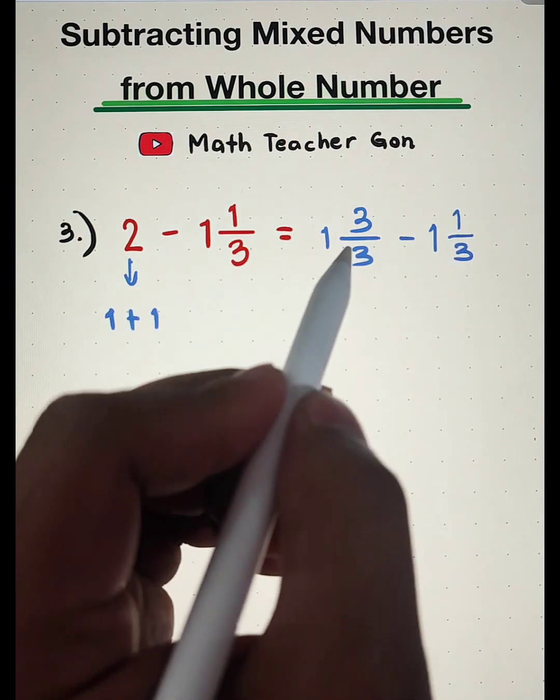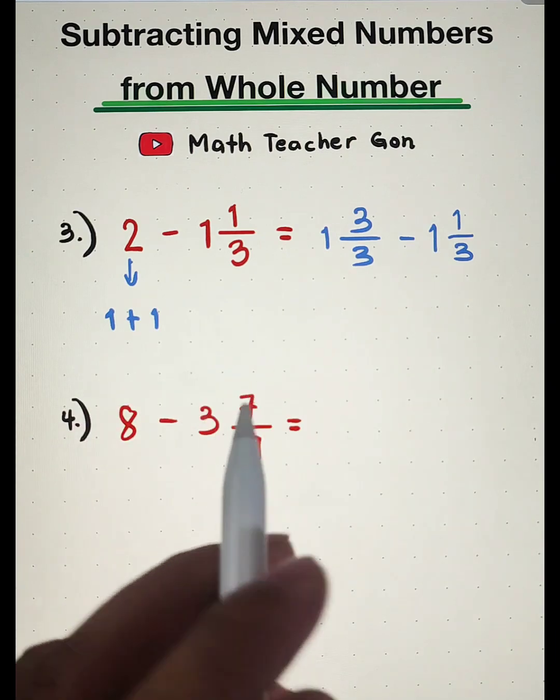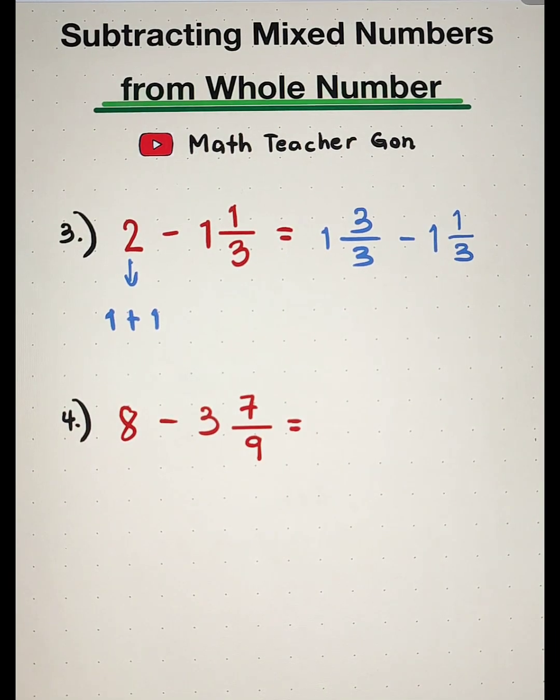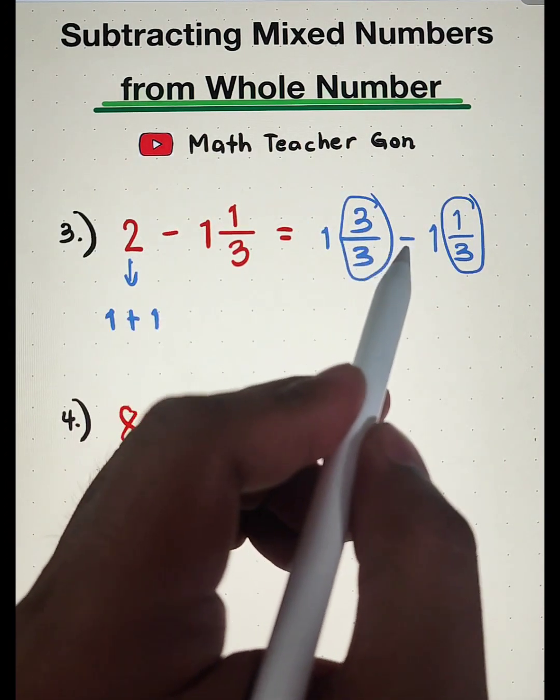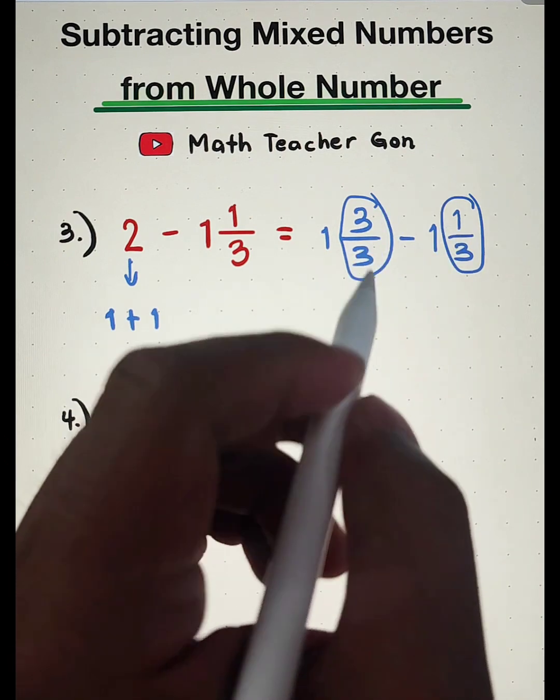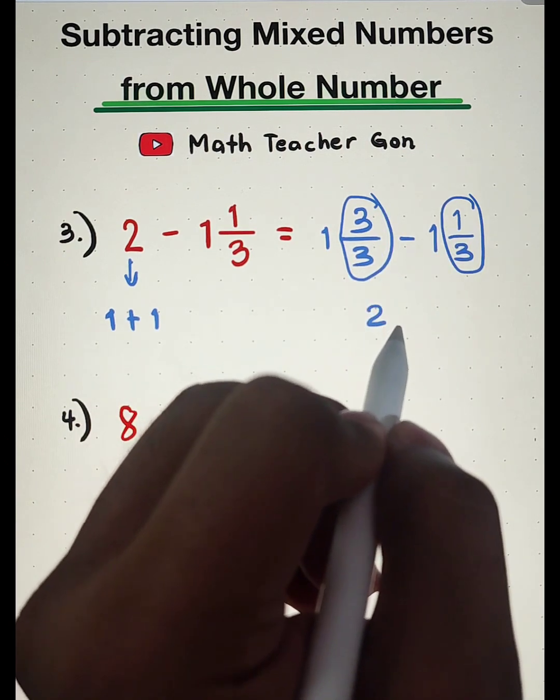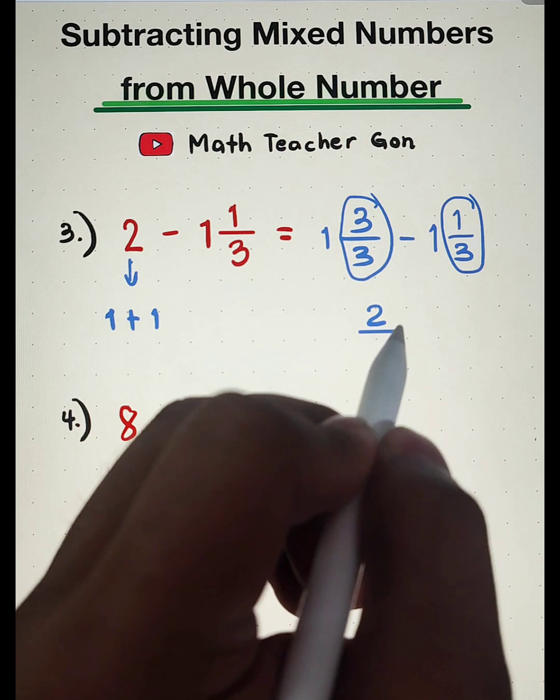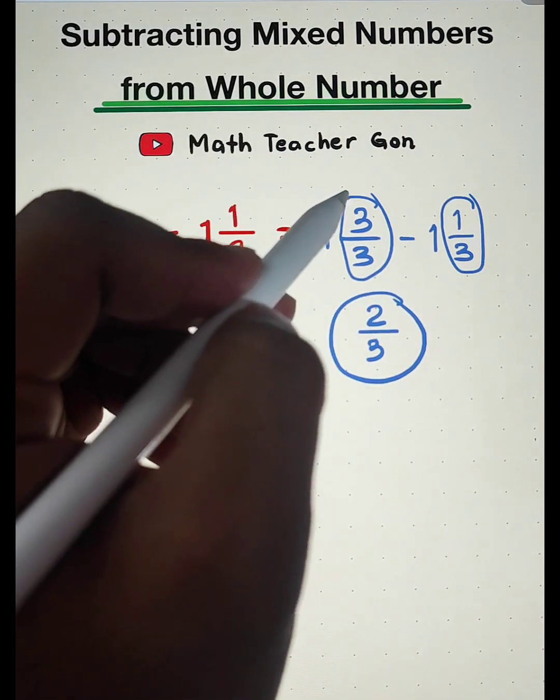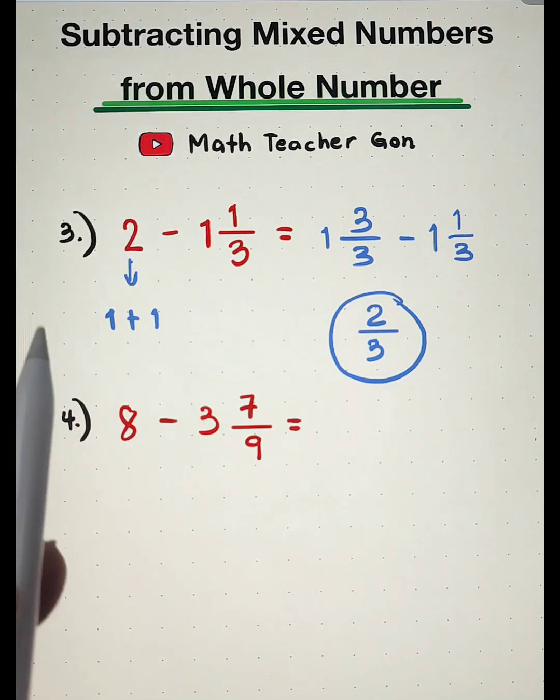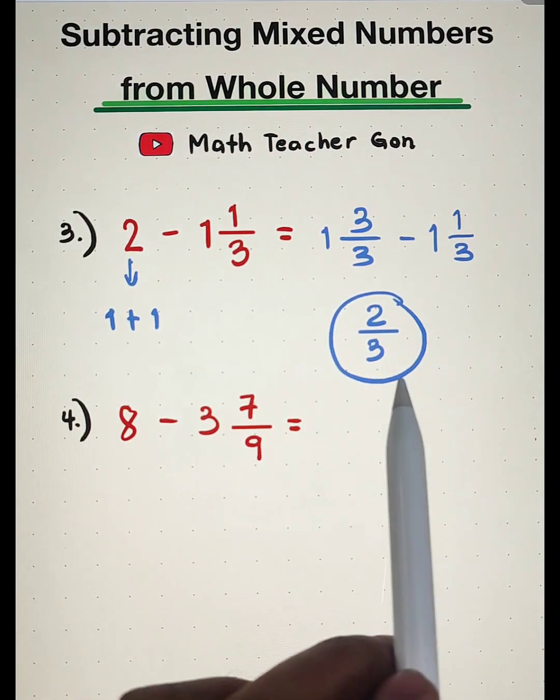Copy minus 1 and 1 third. Let us subtract the whole numbers. 1 minus 1 is 0. So no need to write any whole number because that is equal to 0. Our main problem now is this fraction. 3 minus 1, which is equal to 2, over your denominator, which is equal to 3. Meaning, the correct answer in item number 3 is simply 2 over 3.